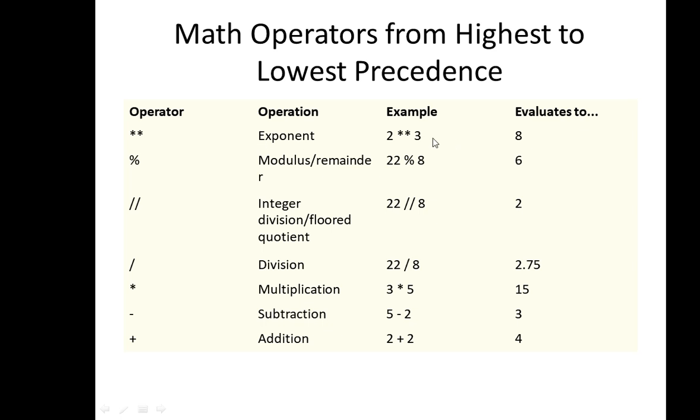For example, exponent. What does this mean, 2 exponent 3? It means 2 times 2 times 2, which evaluates to 8. This has the highest precedence. Next, 22 percentage 8. This percentage operator we call the modulus or remainder operator. It gives us the remainder after dividing 22 by 8, which is 6.